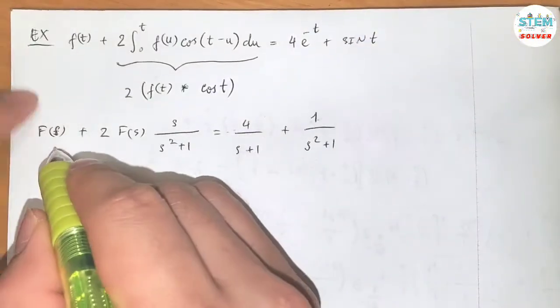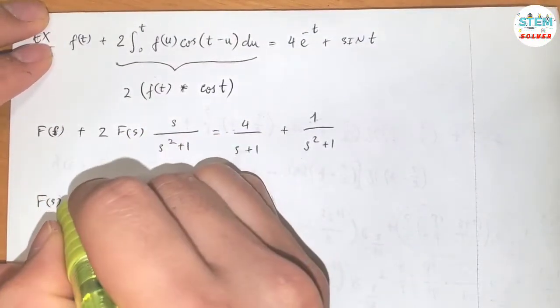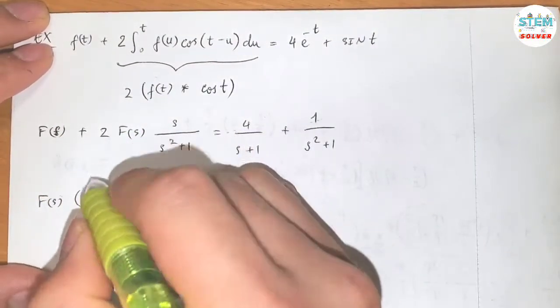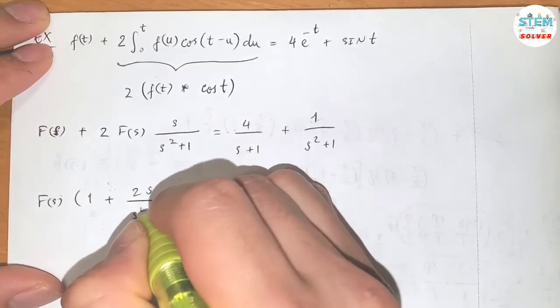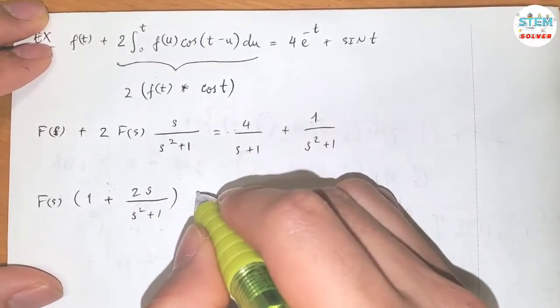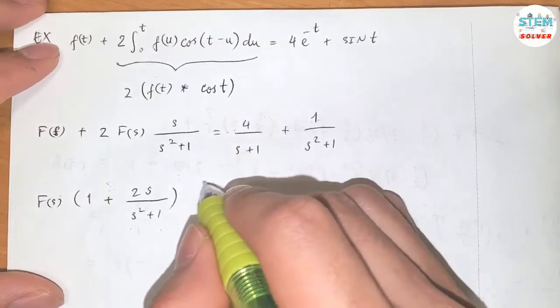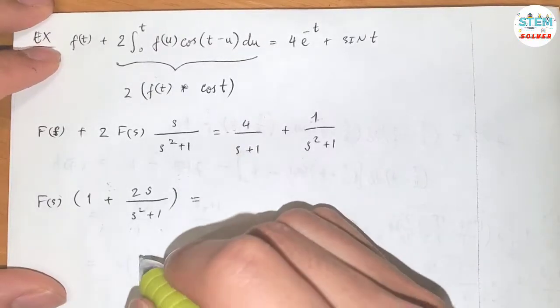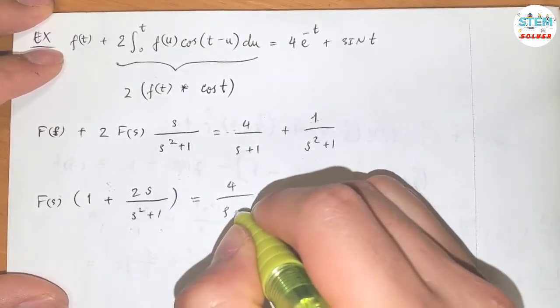You can see we have capital F(s) in this term and this term, so I'm going to factor it out. Then I have F(s) times the quantity one plus 2s over s² plus 1, and on the right side just rewrite it.